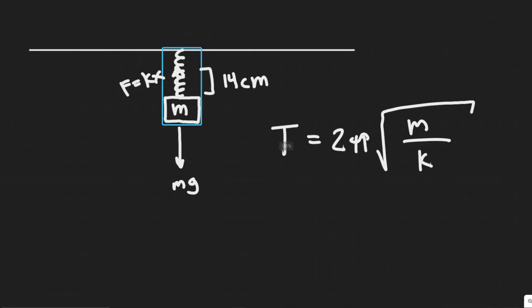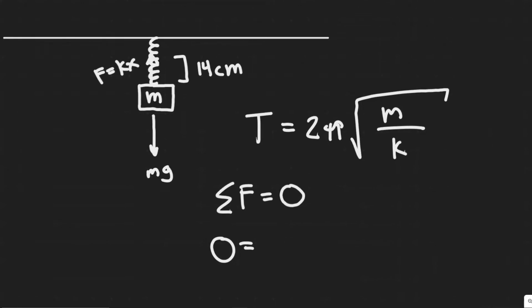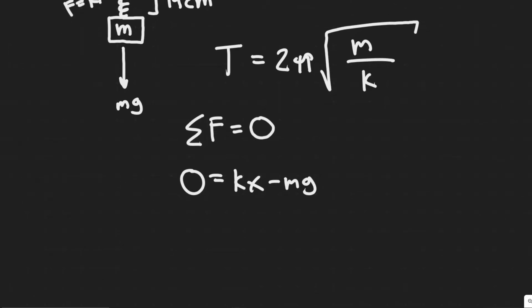And so we know that after it stretches 14 centimeters, it's going to come to rest, which means that the sum of the forces acting on our object here are going to be equal to 0. So if we say 0 equals, and then we sum up our two forces, I'm going to say kx is positive because it goes upwards. So we add up kx, and then we minus mg because it's downwards.